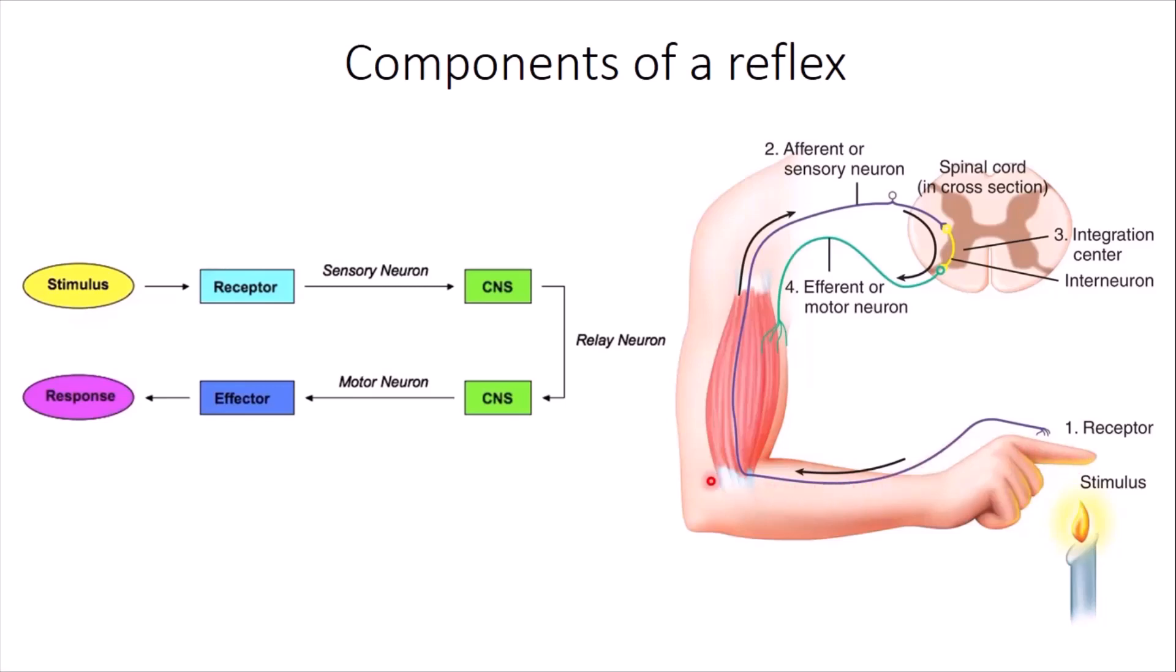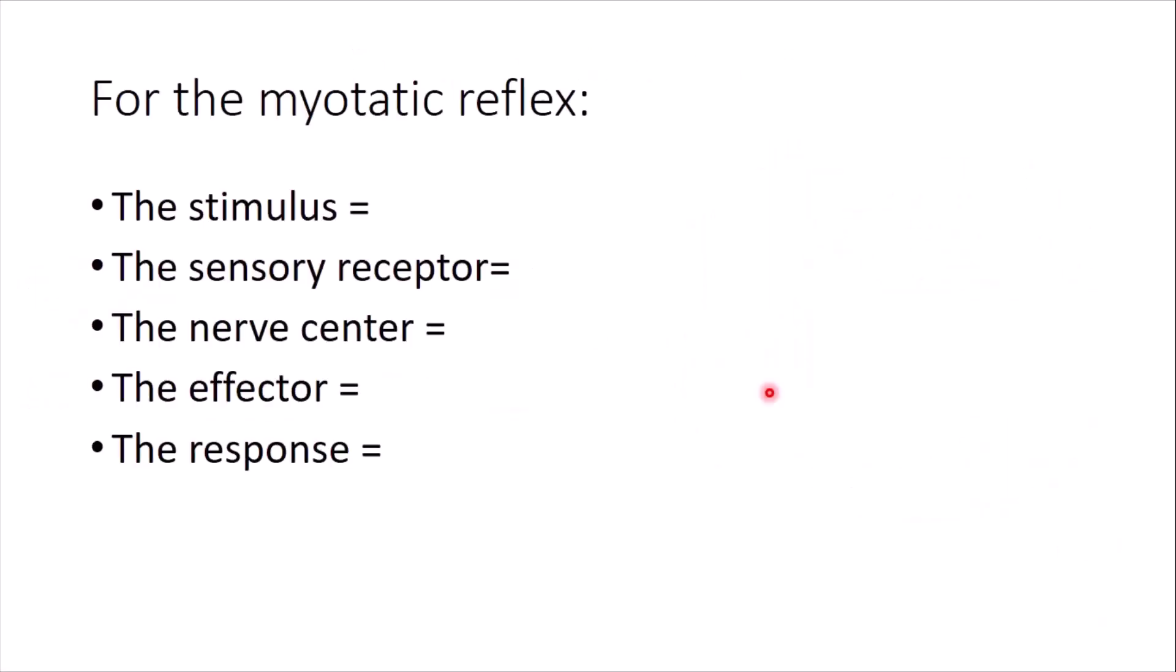Then messages are sent via sensory or afferent neurons to the spinal cord, which is the nerve center in this case, where integration happens, and orders are sent through motor neurons to the muscles, the effectors in this case.